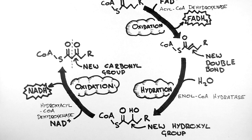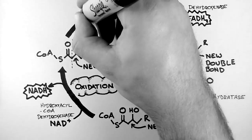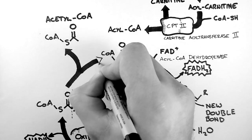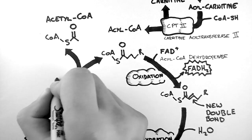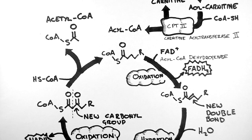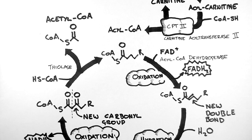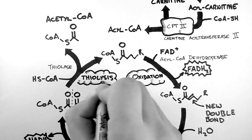The next step is thiolysis, which cuts off the molecule. Everything to the left of this dashed line looks like an acetyl-CoA molecule, and cutting it loose gives us a brand new acetyl-CoA molecule. Now all we have to do is attach a new coenzyme A molecule on the end of the remaining chain, and we have an acyl-CoA ready to go around the cycle again, but this time with two fewer carbons. The enzyme that does this is called thiolase, and this process is therefore called thiolysis. Every time the molecule goes around the cycle, it has two fewer carbons.